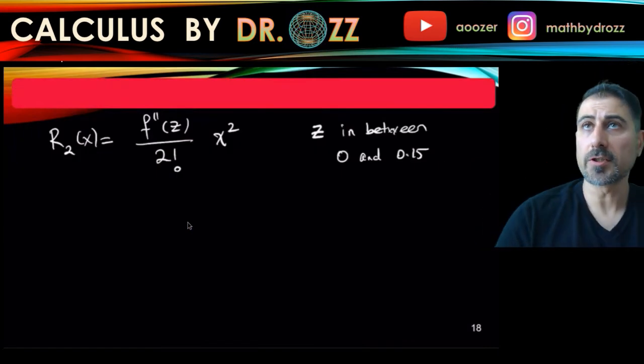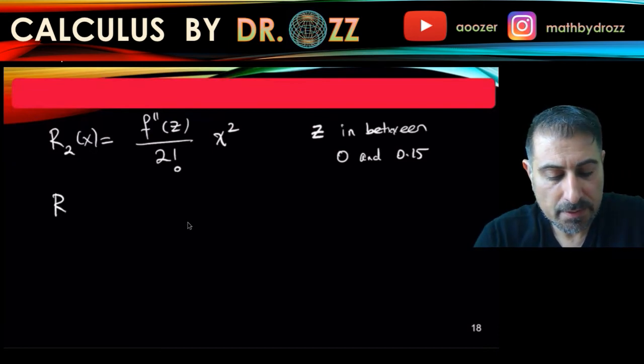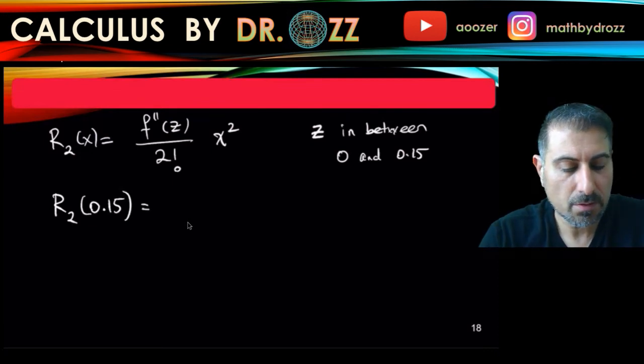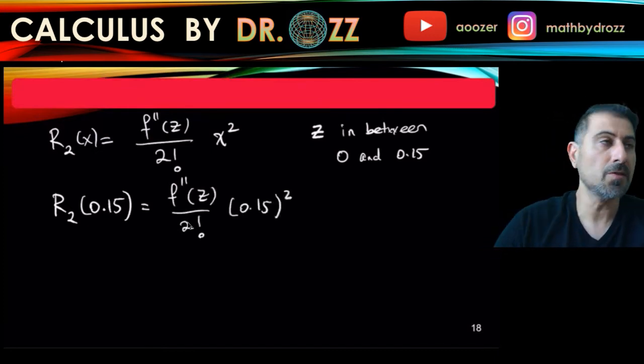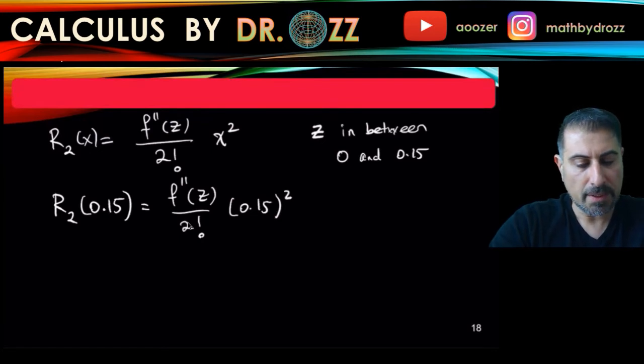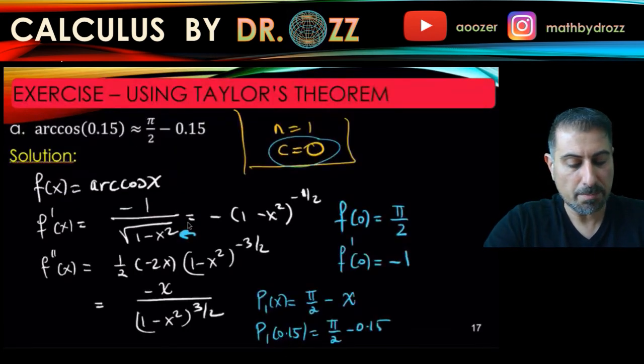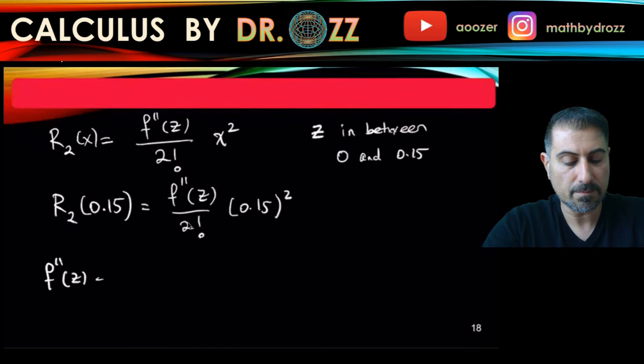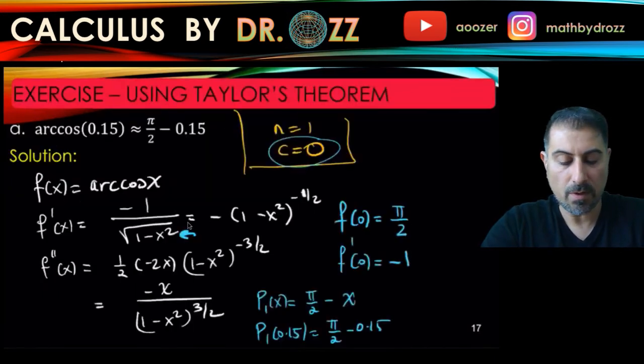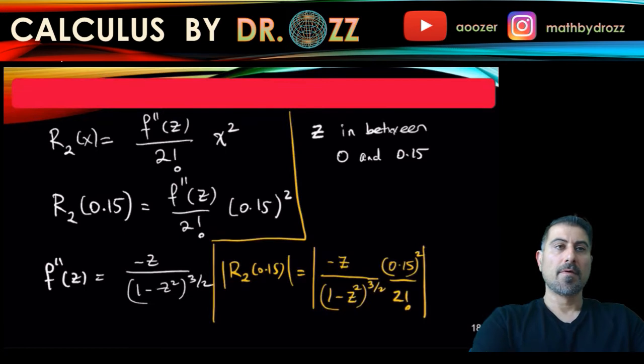Alright. So I just wrote the description of R_2 based on the Taylor's theorem. And the z, the number z is in between 0 and 0.15. I'm going to evaluate R_2 at 0.15. There we go. F double prime of z over 2 factorial times 0.15 squared. So that's why I need f double prime. So what is f double prime at z? So we did the calculation for f double prime here. So it's minus z over (1 minus z squared) to the power of 3/2.